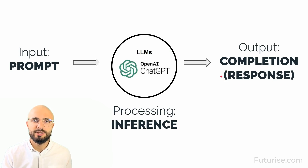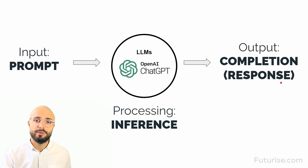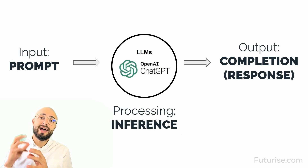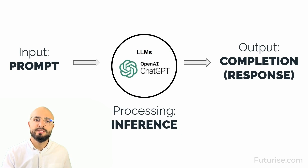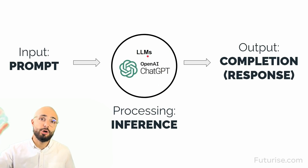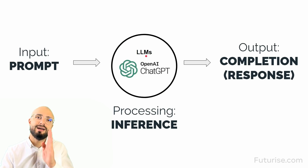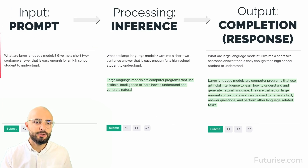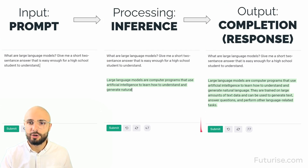It just sounds easier to understand when you say it generates a response, so that is the wording we're going to use. The process in between prompt and completion is what you call inference — that is the process by which large language models actually generate the response. That happens internally; you don't really see what's happening, it's code running in the background, but what you do see is it typing out each token or each word one at a time. On the left-hand side we have a prompt, in the middle we have inference, and on the right we have the completion output.